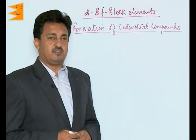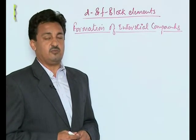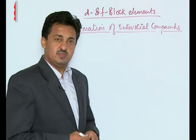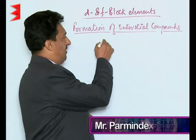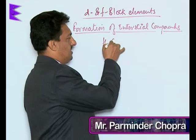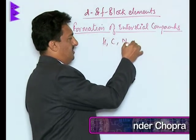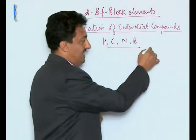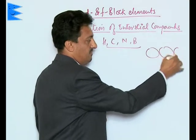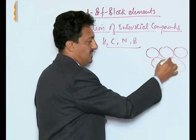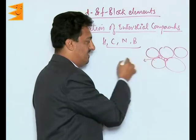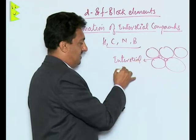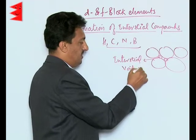Another very unique property of the transition elements is the formation of interstitial compounds. Very small elements like hydrogen, carbon, nitrogen, boron, etc., when mixed in the molten state of these transition metals, easily enter into the lattices of these elements and occupy the interstitial voids or spaces.